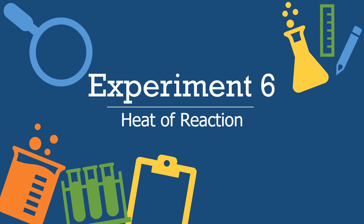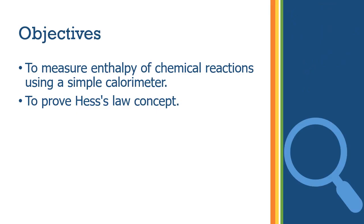Sawaddee ka. This is experiment number six on heat of reaction. The objectives of this experiment are: one, to measure enthalpy of a chemical reaction using a simple calorimeter; and number two, to prove Hess's law concept.